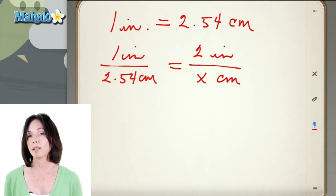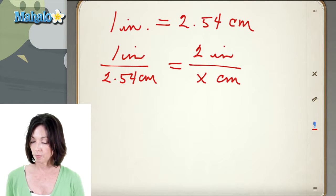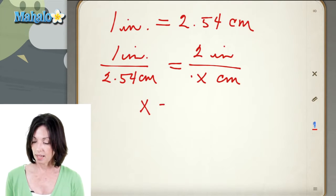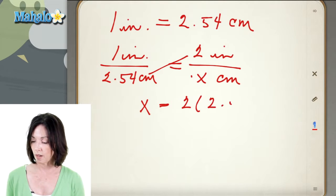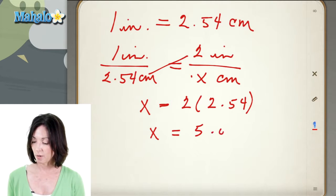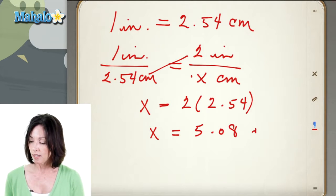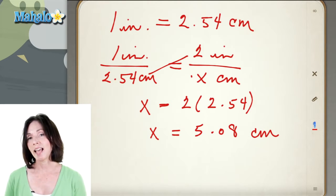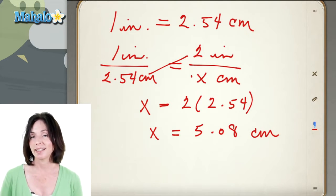Now you can just cross multiply to figure this out. 1 times x is just x, and then we cross multiply this way and we get 2 times 2.54. And 2 times 2.54 is 5.08. So 2 inches is the same as 5.08 centimeters.